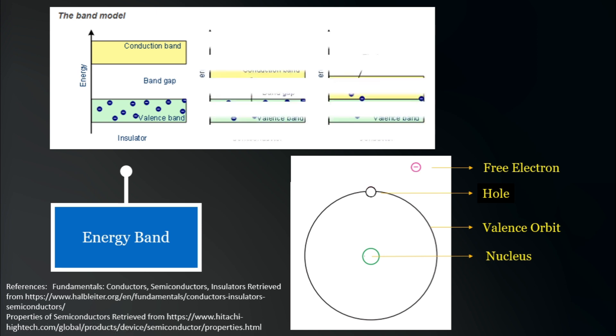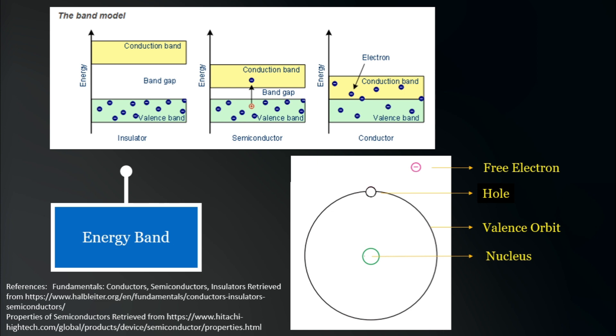Shown here are the band models for a semiconductor and a conductor. If we look into the band model for a conductor, we will observe that the valence and conduction bands overlap. This means that at a certain energy level, in this case, this line over here, we can call the valence electron, also as a free electron.